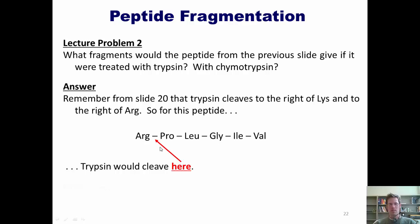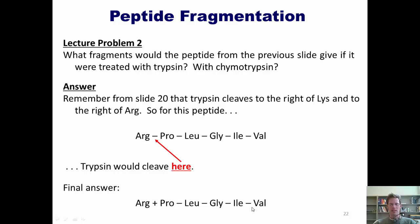What fragments does that make? It makes one fragment — arginine — and then this other huge fragment: proline, leucine, glycine, isoleucine, and valine. Does that make sense?